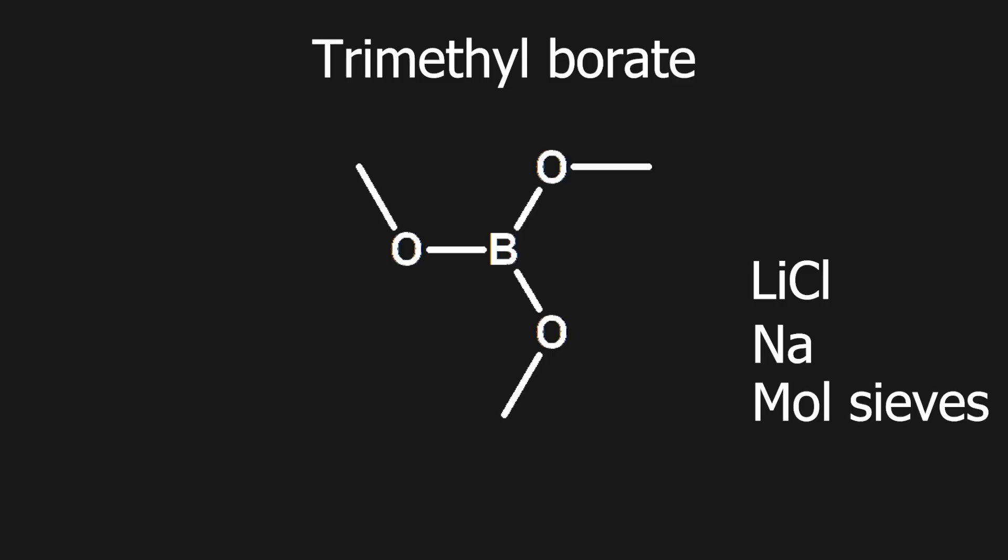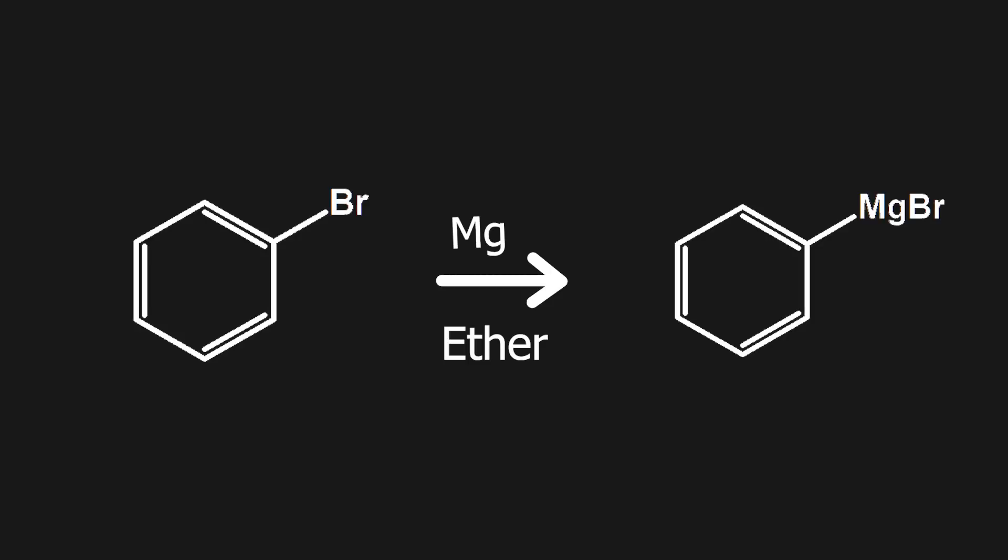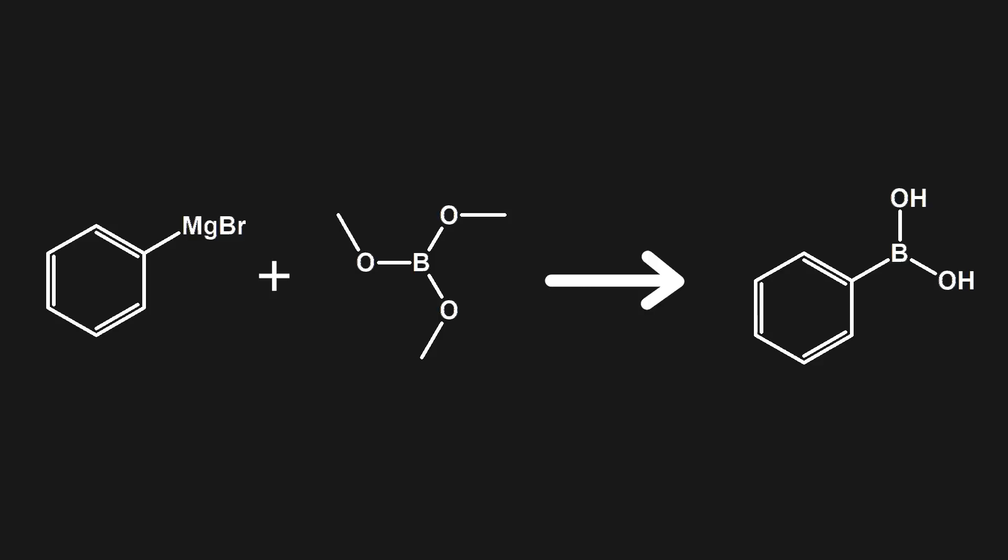Anyhow, I had to buy some instead. And with that, I can continue with the next step, which is making phenylboronic acid. First, I will prepare a Grignard reagent by reacting bromobenzene with magnesium metal to form phenylmagnesium bromide. I can then use this Grignard reagent and react it with trimethylborate to form phenylboronic acid.